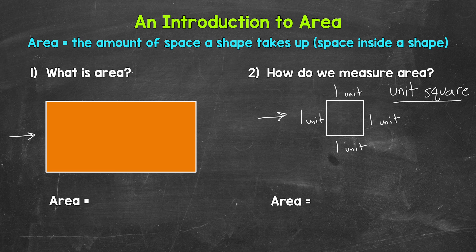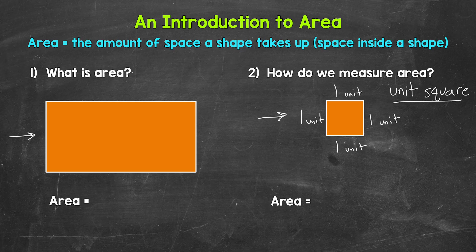The area of this unit square is one square unit. Let's make the area orange. So to make this clear, this unit square has an area of one square unit — that's the amount of space it takes up. So when finding area, we can cover a shape with unit squares and see how many it takes to cover that shape. Each unit square has an area of one square unit, so we see how many square units of space that shape takes up.